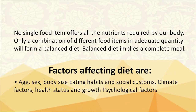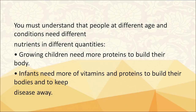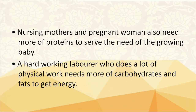Balanced diet implies a complete meal. Factors affecting balanced diet are age, sex, body size, eating habits and social customs, climate factors, health status, growth and psychological factors. Growing children need more proteins to build their body. Infants need more vitamins and proteins to keep diseases away. Nursing mothers and pregnant women also need more protein to serve the needs of a growing baby. A hard-working laborer who does a lot of physical work needs more carbohydrates and fats to get energy.